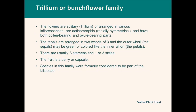The flowers in this family are solitary, such as in Trillium, or arranged in various inflorescences, and are actinomorphic — radially symmetrical. They have both pollen-bearing and ovule-bearing parts. The tepals, in other words the petals that look like they could be sepals, are arranged in two whorls of three. The outer whorl, the sepals, may be green or colored like the inner whorl, the petals. There are usually six stamens and one or three styles. The fruit is a berry or a dry capsule. Species in this family were formerly considered to be part of the Liliaceae, which has since been broken up.